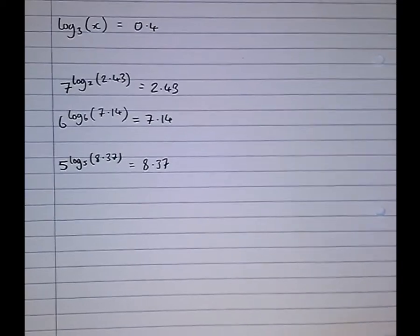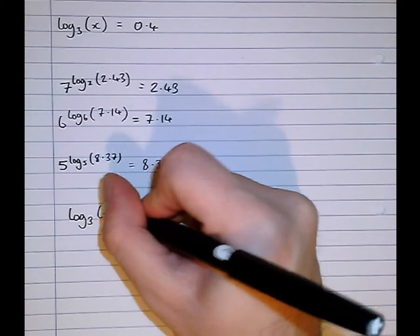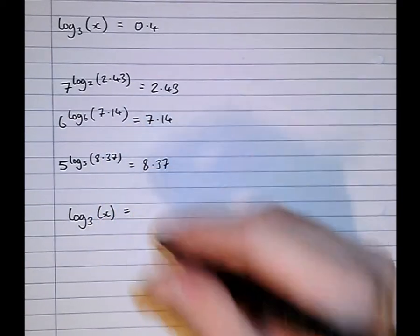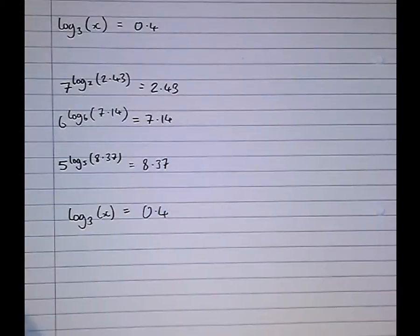So going back to our original equation, trying to solve that. Log to the base 3 of x equals 0.4 was the equation. Let's try and solve that.